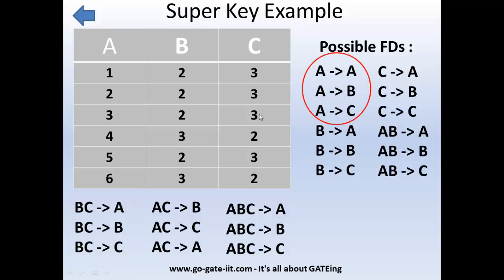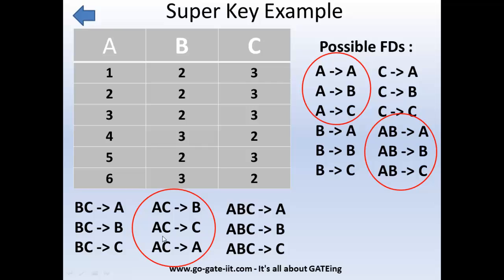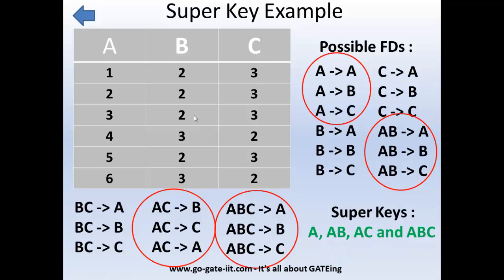As per the superkey definition, an attribute or combination of attributes must derive all the attributes of the given relation. Here A derives A, B, and C — so A derives all attributes, making it a superkey. AB also derives A, B, and C, so AB is a superkey. Similarly, AC derives A, B, and C, making AC a superkey. Finally, ABC derives all attributes A, B, and C. So we have four superkeys for this particular relation.